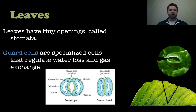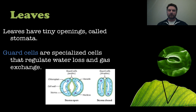Those stomata are opened and closed by things called guard cells. They're specialized cells that help regulate things — when they swell up, they make sure that stoma is open, and then they shrink to close the stoma, as you can see in the picture below. On the right-hand side, you can see an actual microscopic picture of a stoma on a leaf surface.